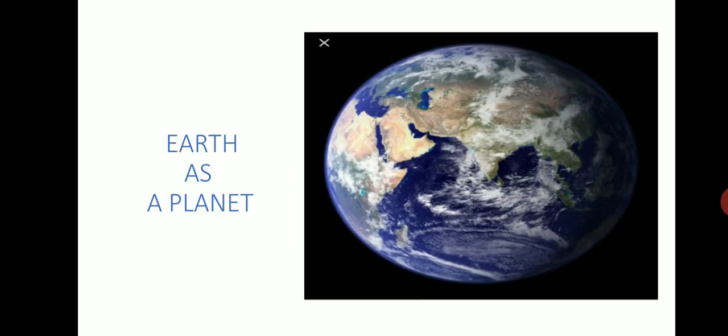First chapter: Earth as a Planet. What is a planet? A planet is a celestial body which revolves around the Sun.